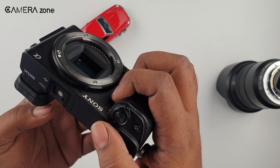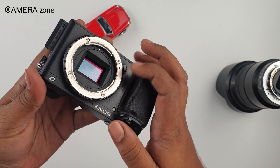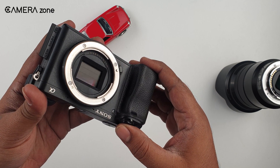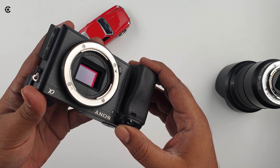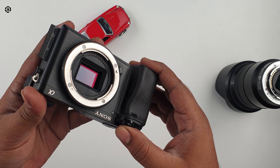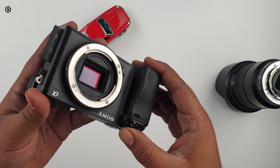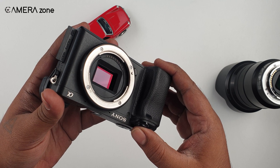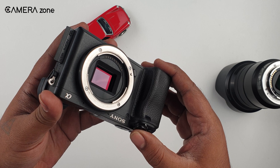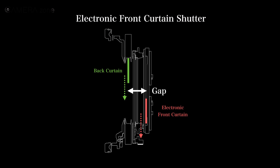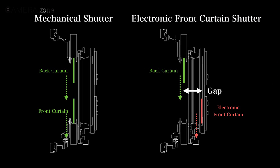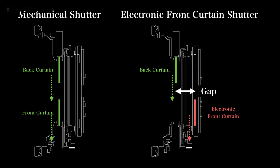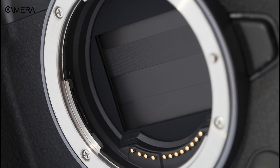In the electronic first curtain shutter, the sensor is exposed to light all the time. When you click the shutter button, the sensor starts reading, and after the reading is finished the curtain moves to block light from entering the sensor. In this shutter only one curtain moves, and there is no vibration while capturing images since the curtain moves only after the sensor finishes its reading.